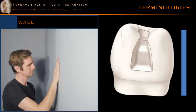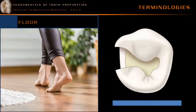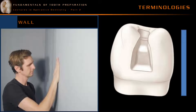A wall is a part of a tooth preparation which is parallel to the long axis of the tooth. Whenever a student in operative dentistry gets confused between a wall, floor, and a seat, they can orient themselves with the analogy of the adjacent wall of a building.